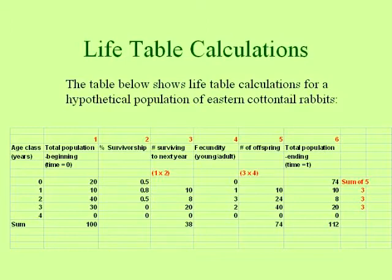We're starting out with twenty young of the year, and ten one-year-olds, and forty two-year-olds, and thirty three-year-olds, and by the time we get to four-year-olds, there's none left. So we have a total beginning population of a hundred. And that is simply a multiplication problem, multiplying column one by column two.